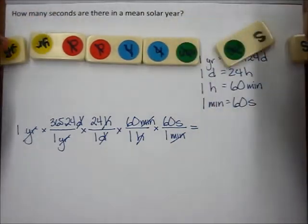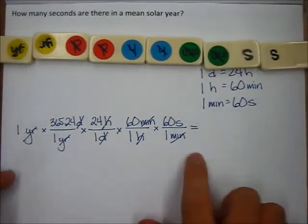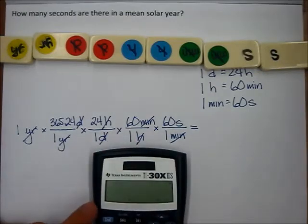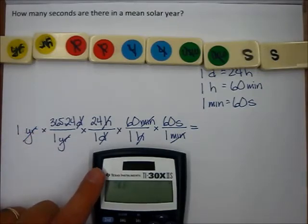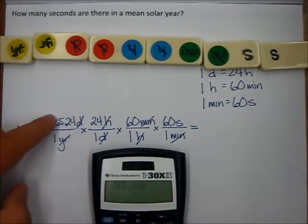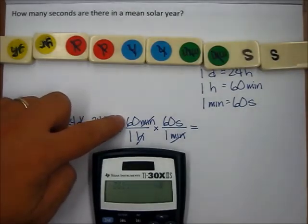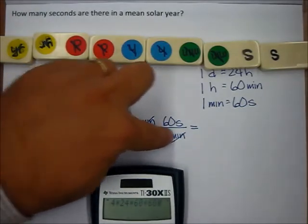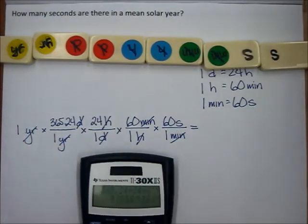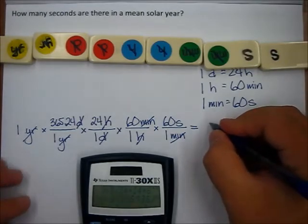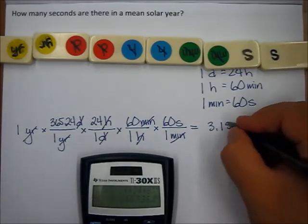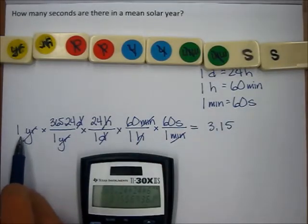I have my little tiles that are connecting the units I'm starting with to the units I want to end up with. I've laid it out in dimensional analysis. I grab my calculator, so I start with the one. You don't have to enter any of the ones as you're doing this, so 365.24 is there on top, times 24, times 60, times 60. You'd go across the bottom and divide by each of these numbers, but they're all one, so I'm just going to hit equals and I get 3.15.